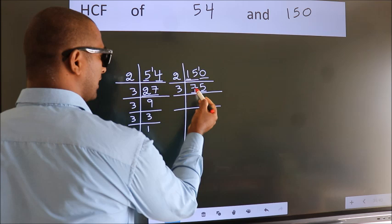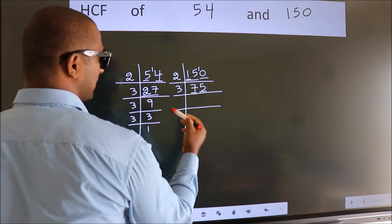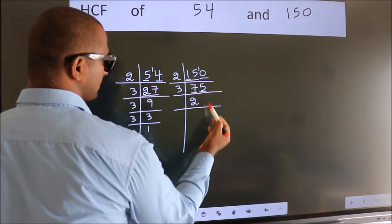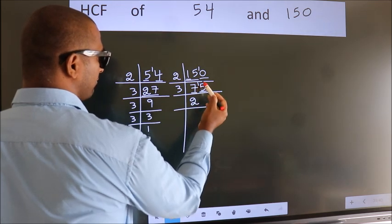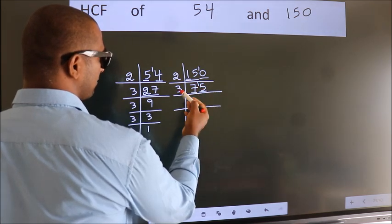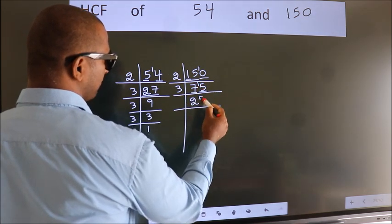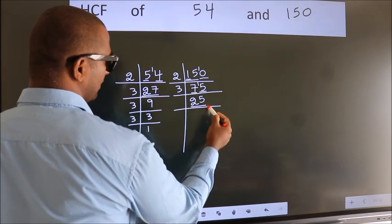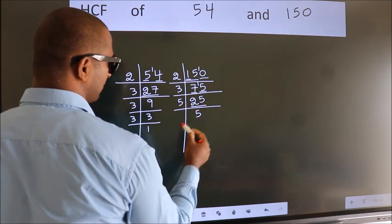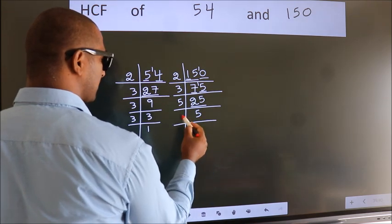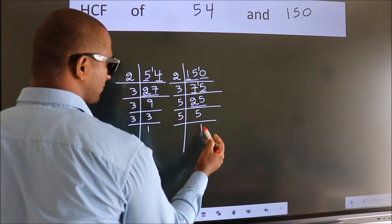First number 7. A number close to 7 in 3 table is 3 times 2 is 6. 7 minus 6, 1 carried forward 15. When do we get 15 in 3 table? 3 times 5 is 15. Now, 25 is 5 times 5 is 25. 5 is a prime number, so 5 times 1 is 5.